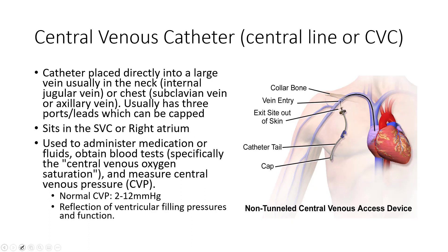A central venous catheter, or CVC, is a catheter placed directly into a large vein, often the internal jugular vein or subclavian vein. It usually has multiple port leads emanating out. It's used to administer medications, measure central venous oxygen saturation, and central venous pressure, giving us a reflection of ventricular pressures and function. It's primarily used as a monitor to look at cardiac function in the heart.